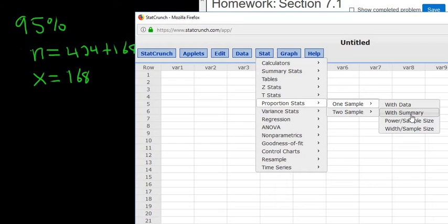Whenever you're doing confidence intervals for percentages or proportions, you just always go here. Proportions, One sample with summary.